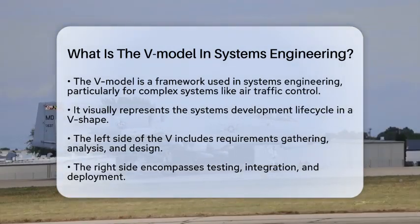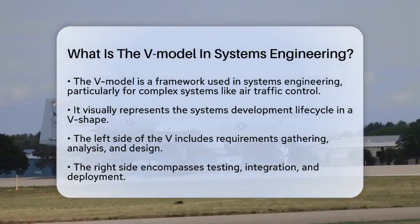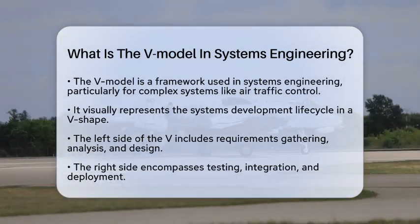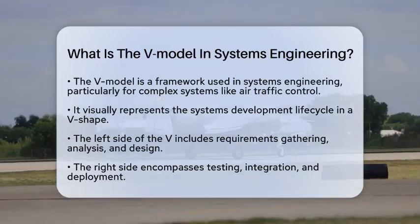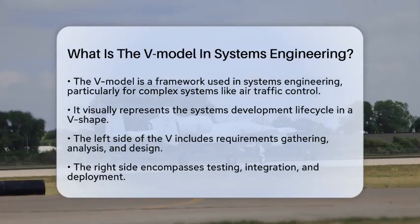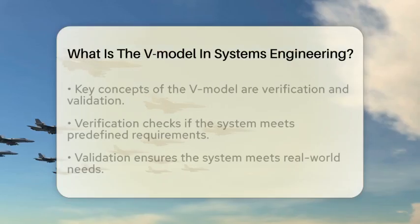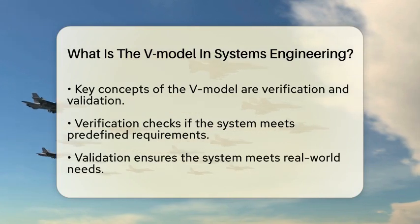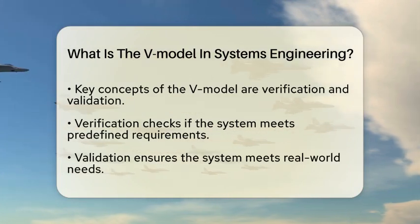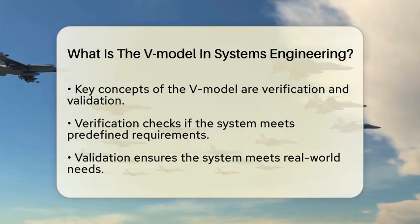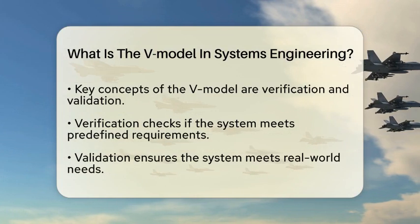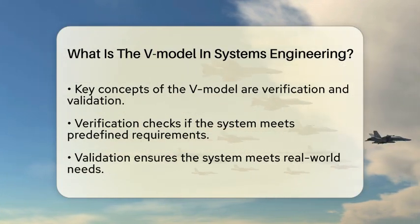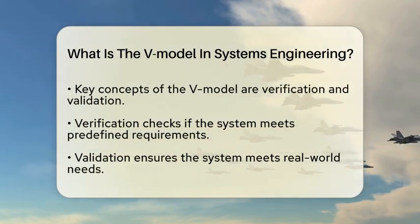At the heart of the V-Model are two key concepts: verification and validation. Verification checks if the system meets predefined requirements. Validation ensures that the system meets real-world needs. This distinction is essential for ensuring that the system is built correctly and serves its intended purpose.